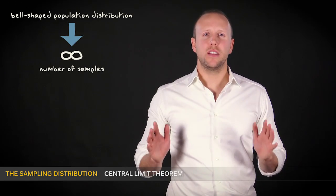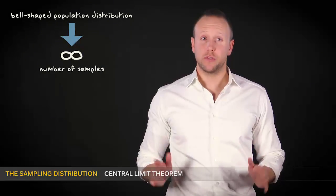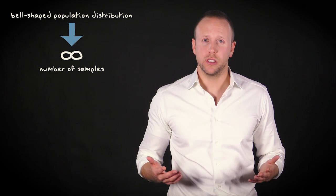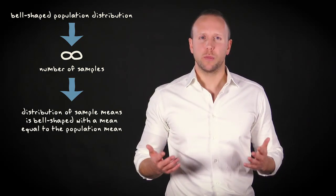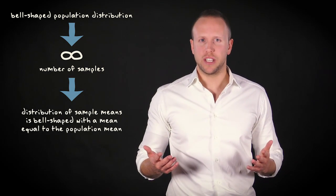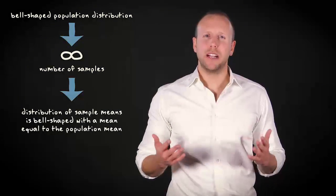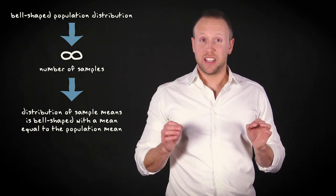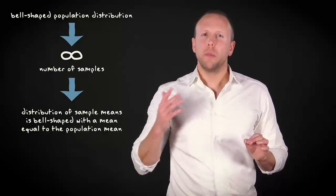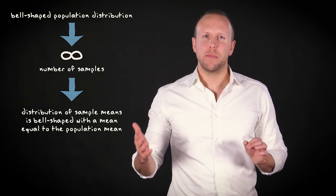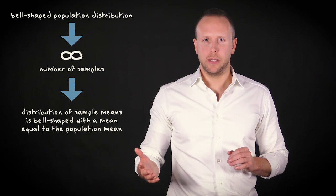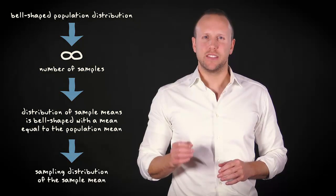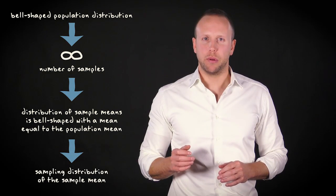If you draw an infinite number of samples from a bell-shaped population distribution, the distribution of means from this infinite number of samples will be bell-shaped, and the mean of this distribution of sample means will be exactly the same as the population mean. We call this distribution the sampling distribution of the sample mean.